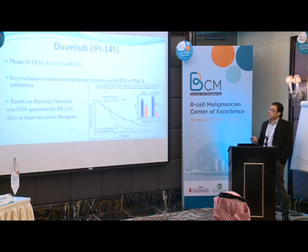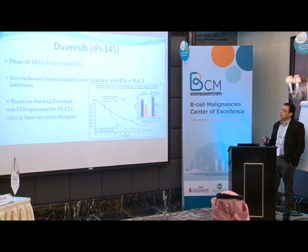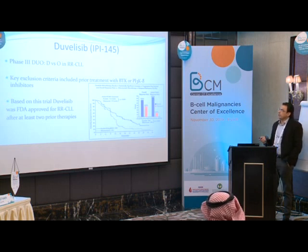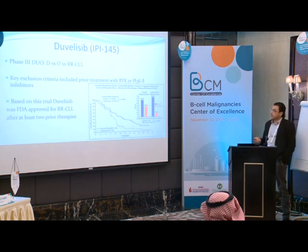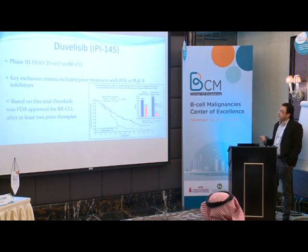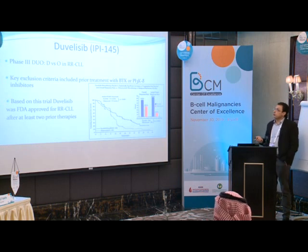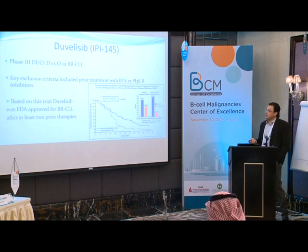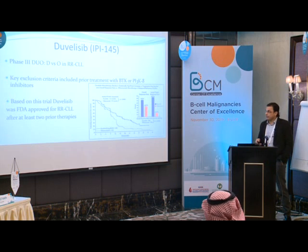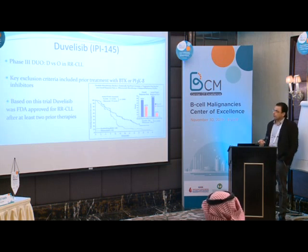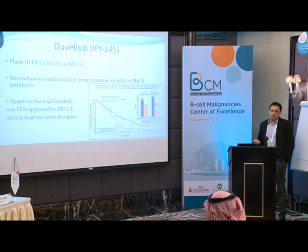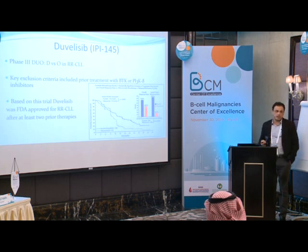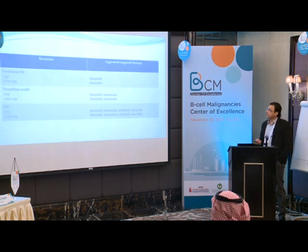The fourth agent is duvelisib, a PI3-kinase gamma and delta inhibitor, compared to idelalisib which is only delta. The phase III DUO trial was duvelisib versus ofatumumab in relapsed/refractory CLL — the duvelisib arm was better. Key exclusion criteria were prior treatment with BTK or PI3-kinase inhibitors, so we don't know if it works after those. Duvelisib was FDA approved for relapsed/refractory CLL after at least two prior therapies. It shares toxicities with idelalisib and has a black box warning.